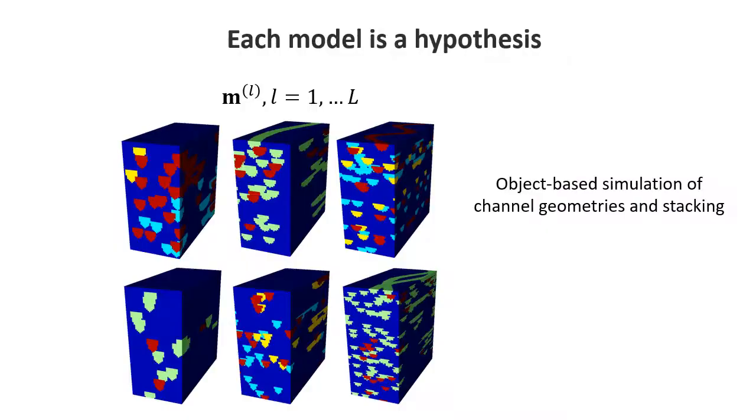With all that, we do now an object-based simulation, which is a method by which geometries are drawn from these prior distributions. Then these geometries are placed in a space based on their stacking and some random variation within that. We see that each model here, many models are generated. They could each be hypotheses. They're not necessarily an actual model of the reservoir. But they will allow us to study whether the distributions that we specified actually can allow us to predict observations that we have, which in this case is geophysical data.